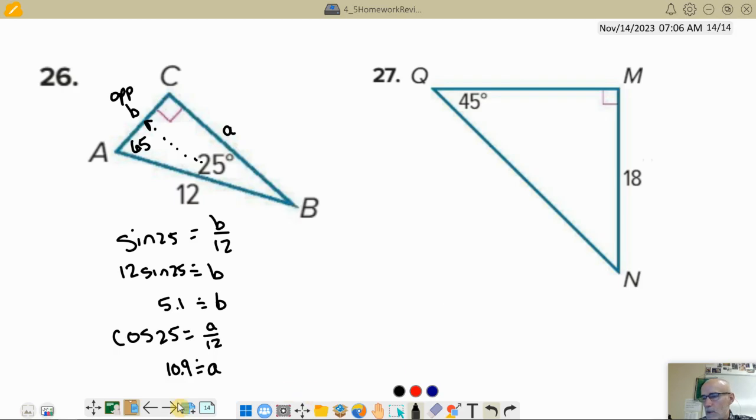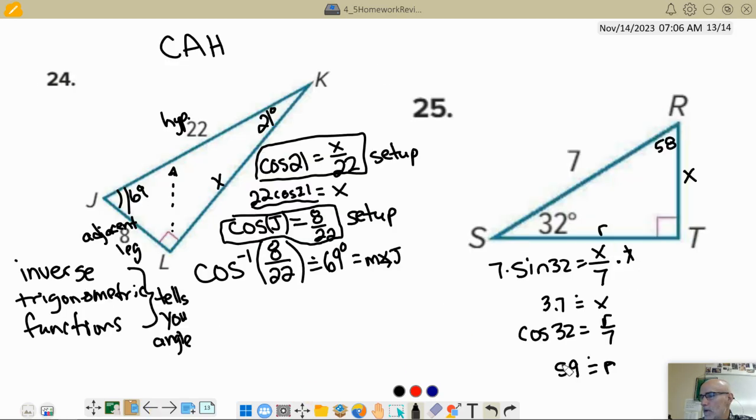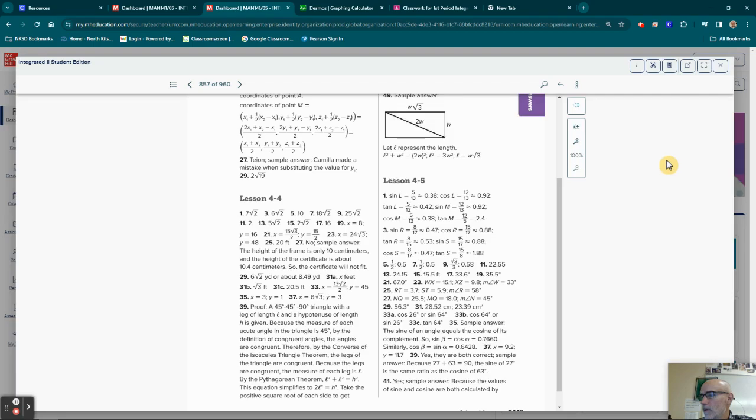Let's go back over here and check our number 25. See if we have the same answers. 3.7, 5.9, and 58. Was that what we were saying? 3.7, 5.9, and 58. That's exactly what we got.